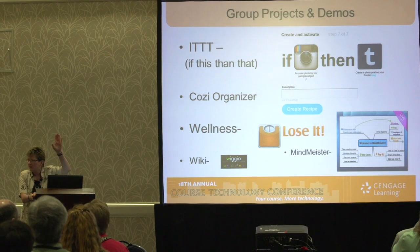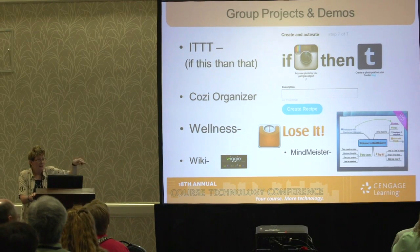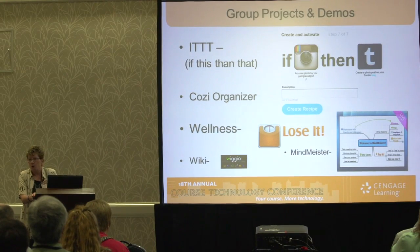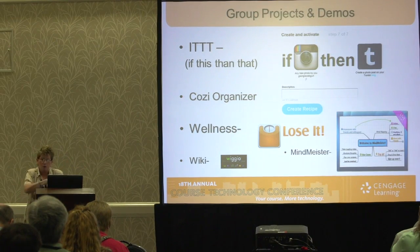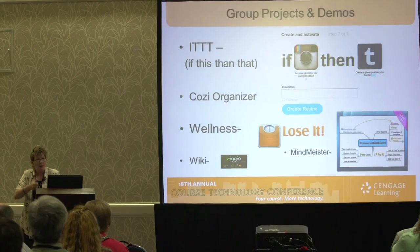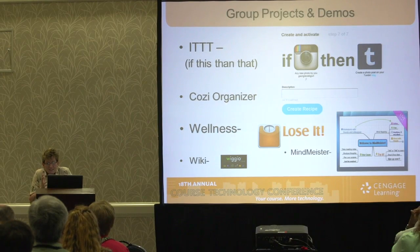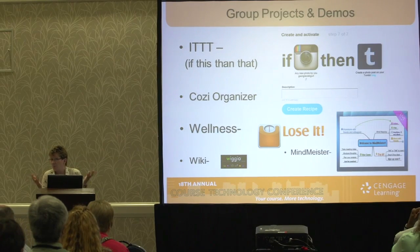"If This Then That" — anybody ever use that? It's kind of neat. It's sort of like a little macro: if I take a picture on my phone, I want it to automatically be posted to Twitter. Or say you want to buy something from Craigslist — you put in your search, like 'I want a scooter that costs this much in Harrisburg, PA,' and when there's a match, it sends you an email or posts to Facebook. You set up these automated tasks, which they call recipes. Students had a lot of fun creating those, and conceivably it could save you some time.